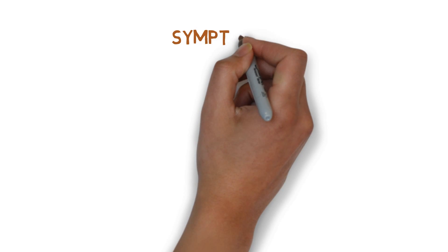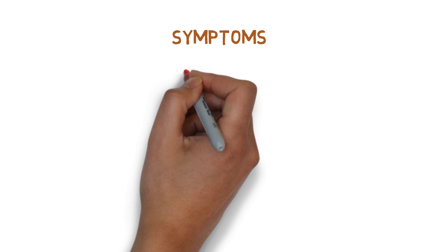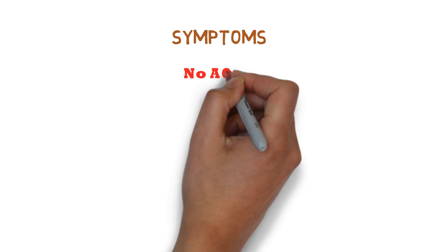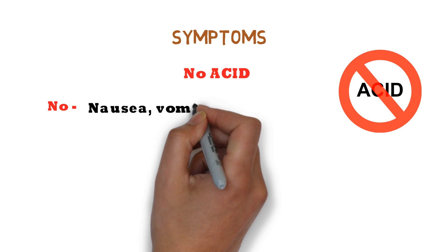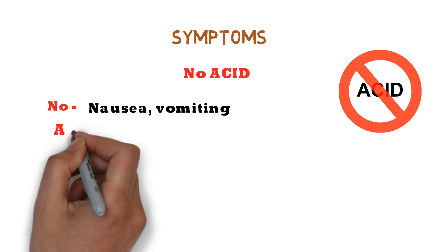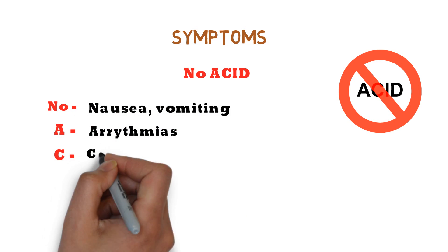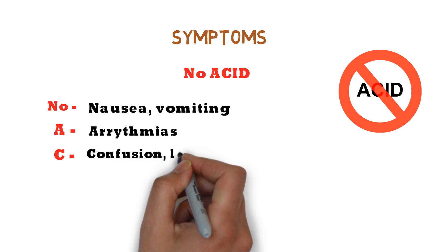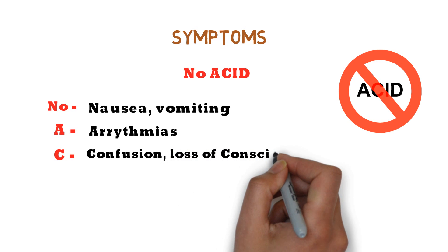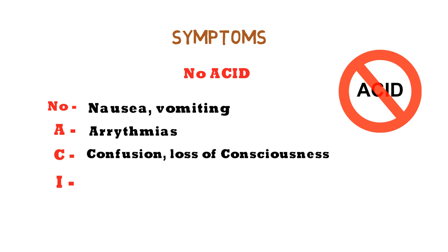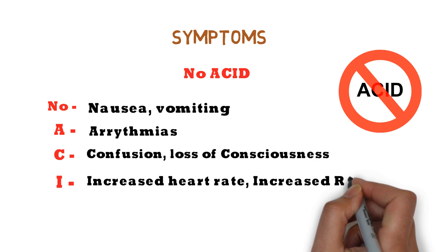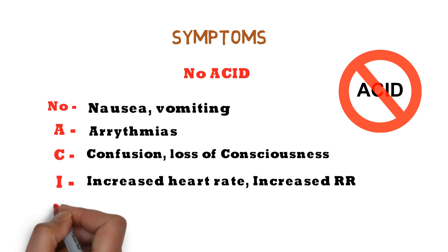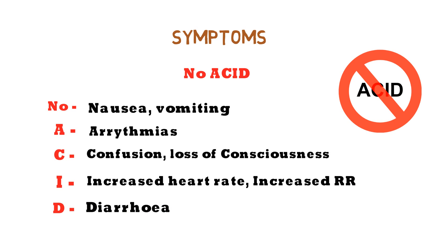Symptoms of metabolic acidosis can be remembered by the mnemonic NO ACID: N-O for nausea and vomiting, A for arrhythmias, C for confusion and loss of consciousness, I for increased heart rate and increased respiratory rate — which is Kussmaul's respiration — and D for diarrhea.